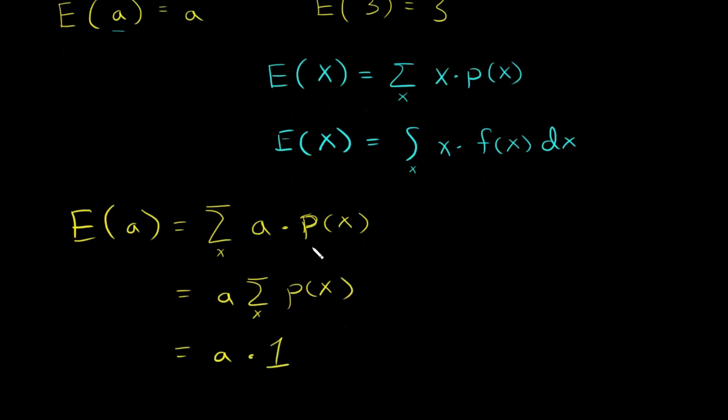So basically this equals a. So you've shown that the expected value of a is a, if x is discrete.